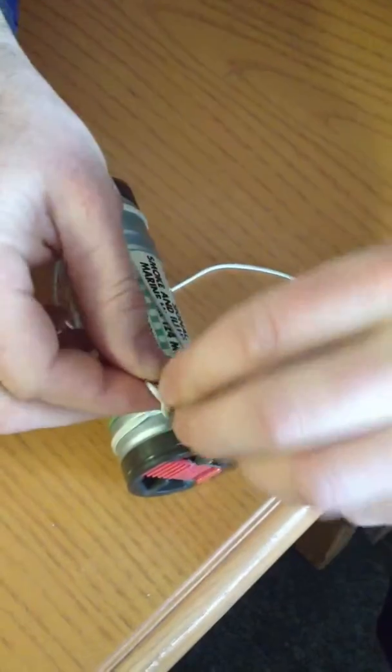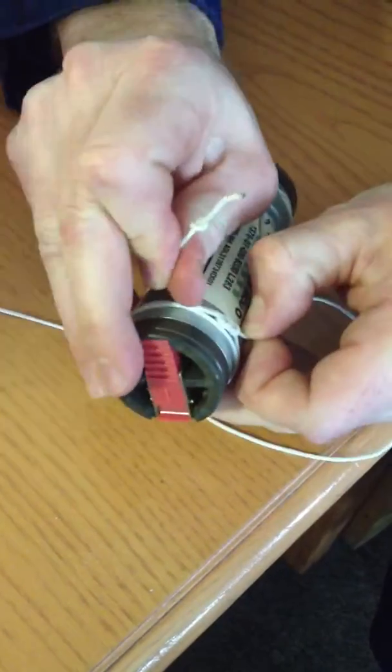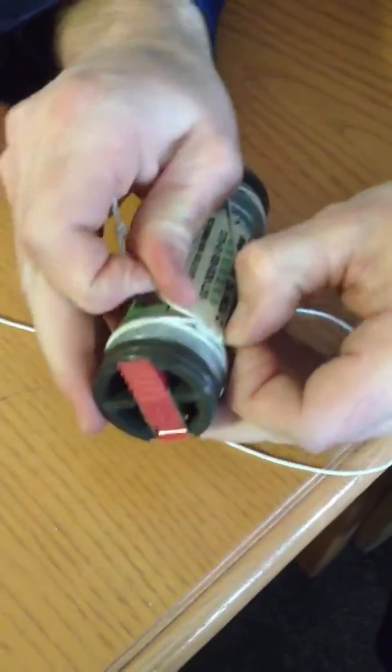And then, it just looks like a square knot. Put your overhand knot on this side. And then I do the same thing. I take a drop of super glue, drop it on there. That way it doesn't move.